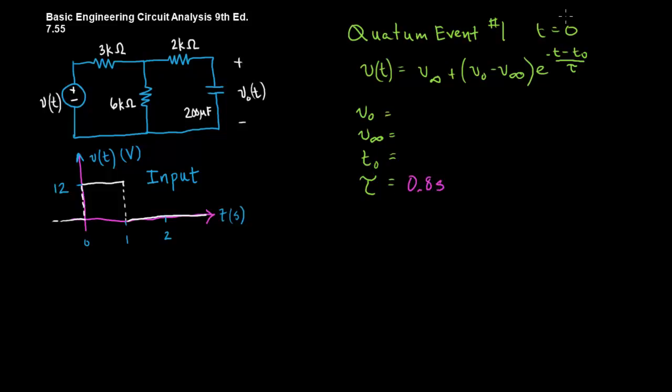T0 is defined by the quantum event that we're looking at, and it occurs at 0 seconds. V at infinity, well, what we do is we treat the quantum event as if it occurs, and nothing else happens afterwards. The voltage stays at 12 volts for all time. What will happen to the voltage source, the voltage on the capacitor? This ends up acting like an open, because the capacitor gets charged, and there's no current flowing through the resistor here then. And so, the voltage on the capacitor will look exactly the same as the voltage on this 6k ohm resistor. So, you can use voltage division, and you'll find that this is 8 volts.